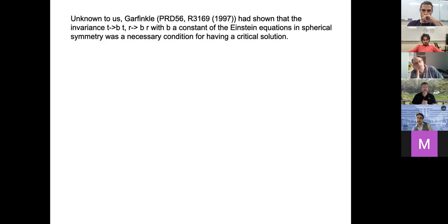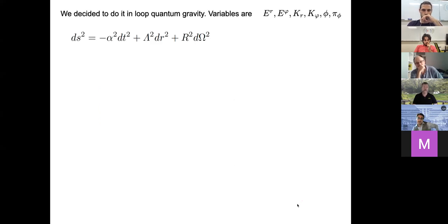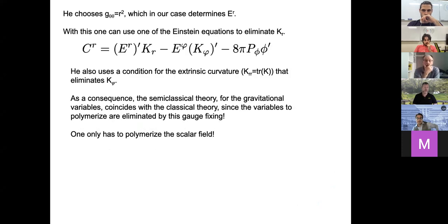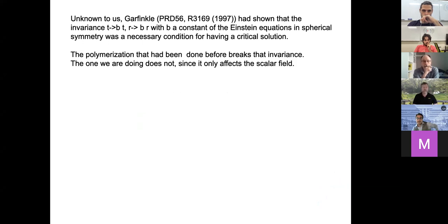Unknown to us, David Garfinkel had shown that the classical system has an invariance t → bt, r → br, and that this invariance is a necessary condition to have a critical solution. The previous polymerization — messing with the r variable — breaks that invariance, so in hindsight it's not surprising they don't have a critical solution and instead have a mass gap. But in our polymerization, we're not touching the r variable; we're only polymerizing the scalar field. This preserves the t → bt, r → br invariance, so there was a chance of having a critical solution.